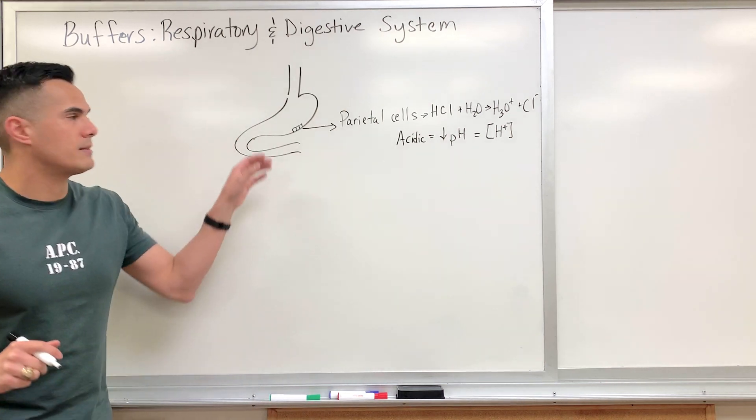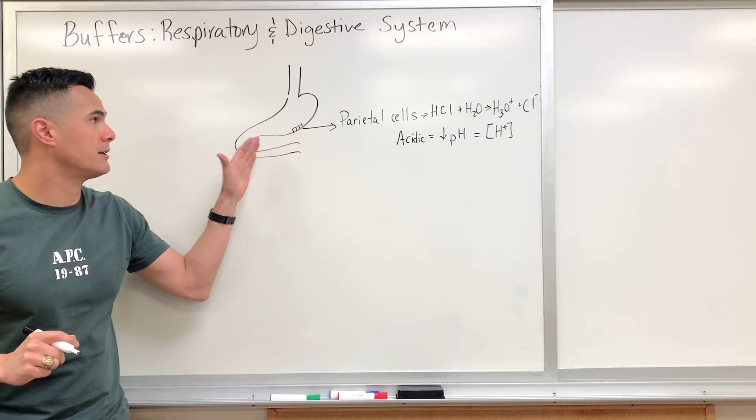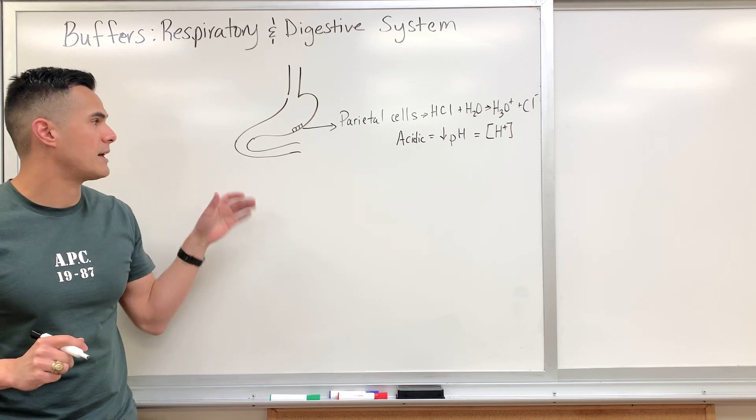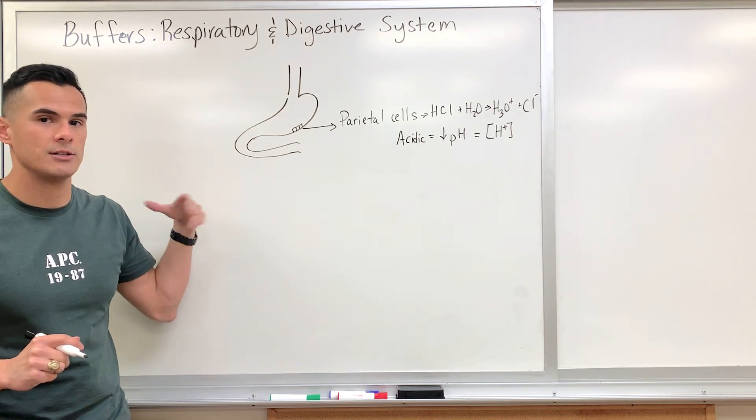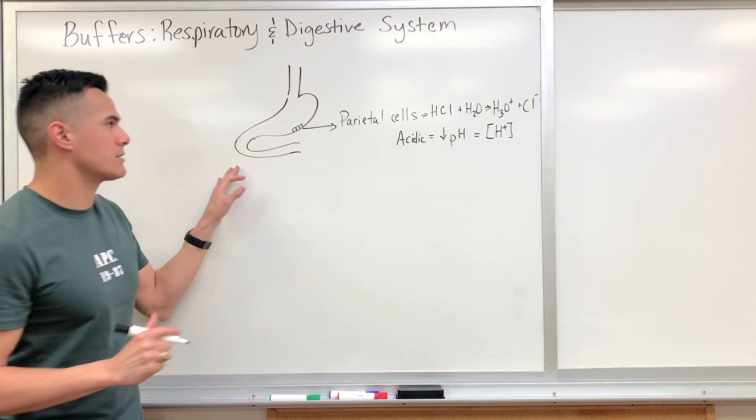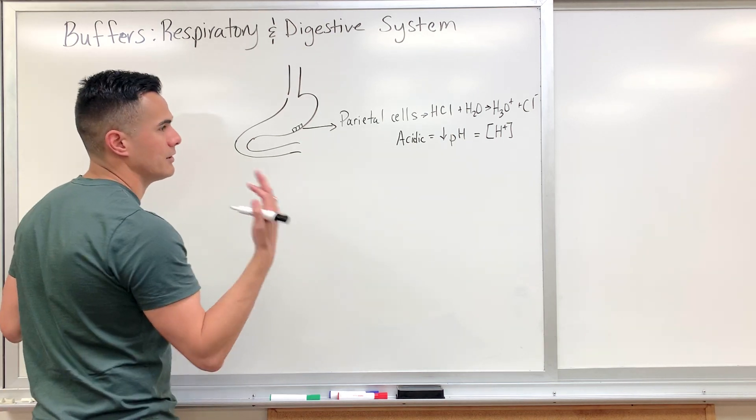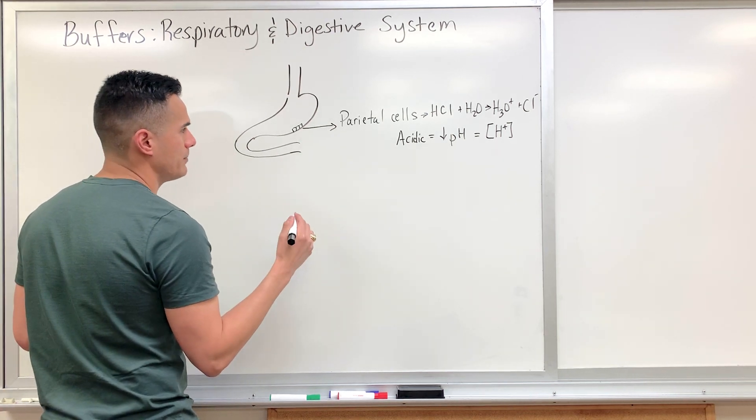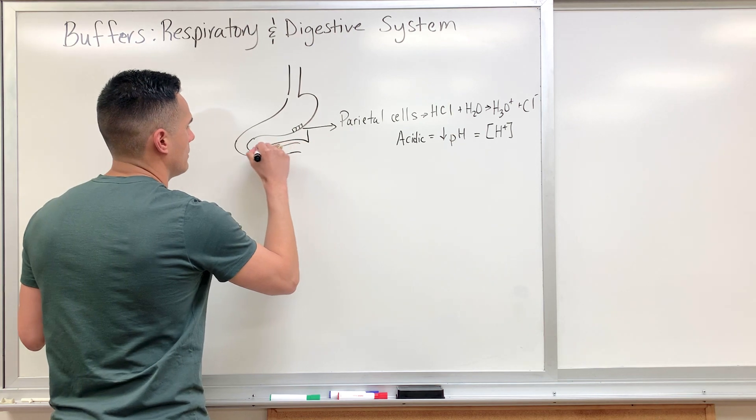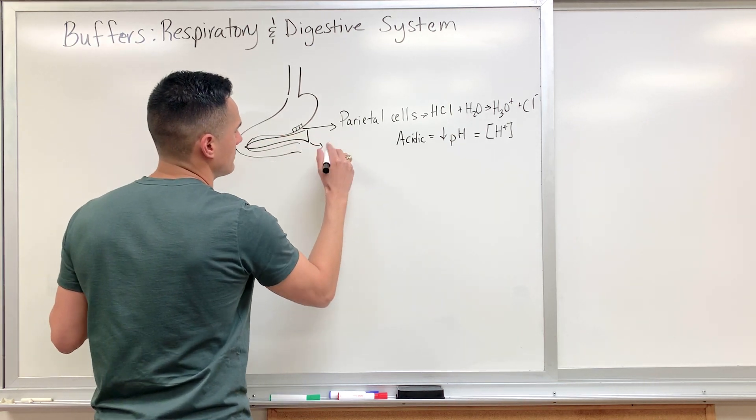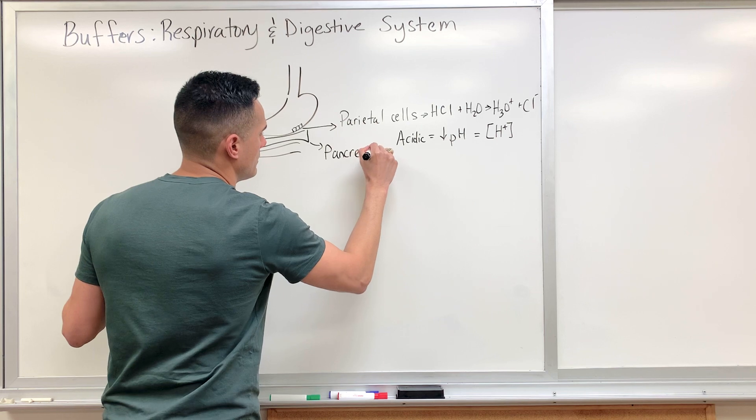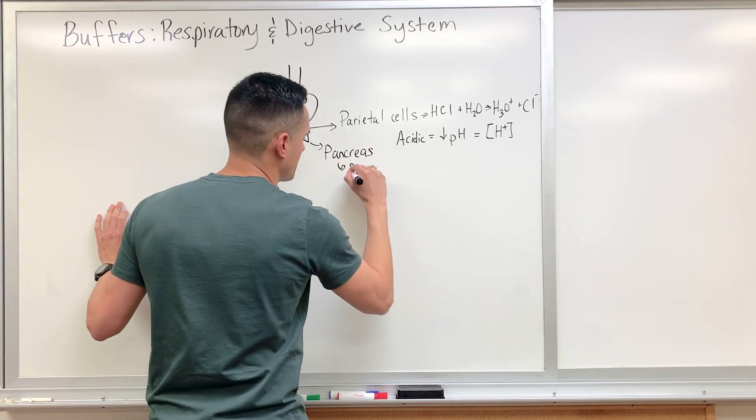So this acidic chyme that's found here within the stomach has to get neutralized once it gets here into the duodenum. And so in order to neutralize this acidic chyme, our pancreas secretes pancreatic juice.